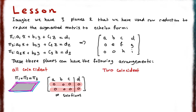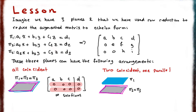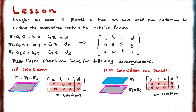We can also have a situation where two planes are coincident and one is parallel — two planes touching at infinite points and one completely separated. If two planes are coincident, one row becomes all zeros. The third row represents the parallel plane: if it's parallel and not touching, you get zeros for the variable coefficients but some non-zero constant value in that row.